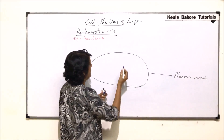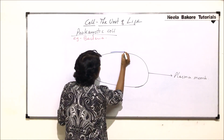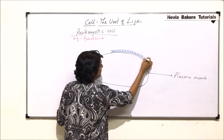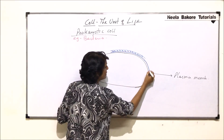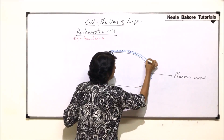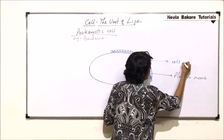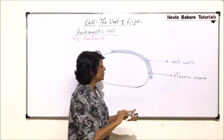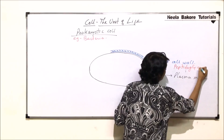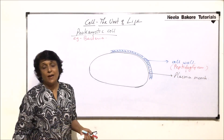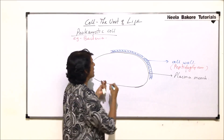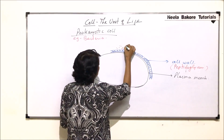Outside this plasma membrane there is a cell wall, and this cell wall is made up of a substance called peptidoglycan. This is all around — we can just show it in one part but it is going to be everywhere all around the cell. So this layer is the cell wall and the substance it is made up of is called peptidoglycan.